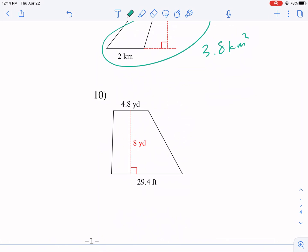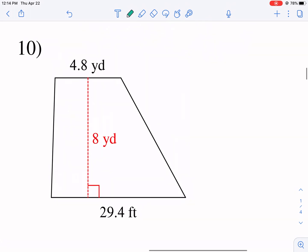Probably the tougher ones are the trapezoids because you have to add the bases first. 4.8 plus, this would be base 1, base 2. Add the two bases together. 29.4. And then you multiply that times 8. And I get 273.6. And I divide that by 2 or times 1 half. And I get area equals 136.8 feet squared. And that's my area.